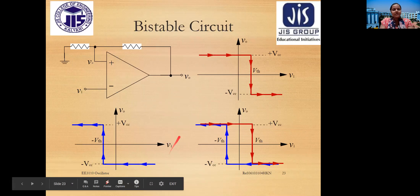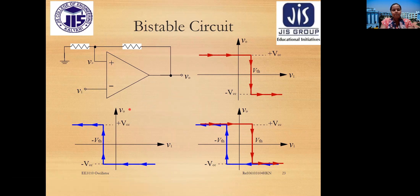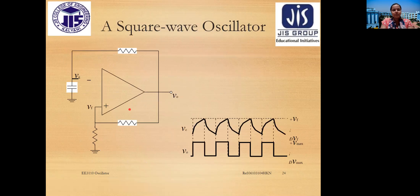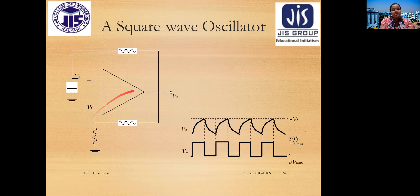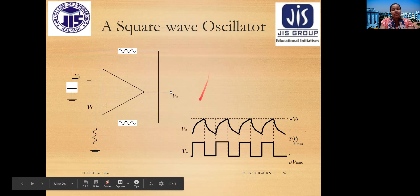The bistable circuit is introduced with its circuit symbol shown. The square wave oscillator is similar to a Schmitt trigger except that a capacitor is added, producing a square wave output.